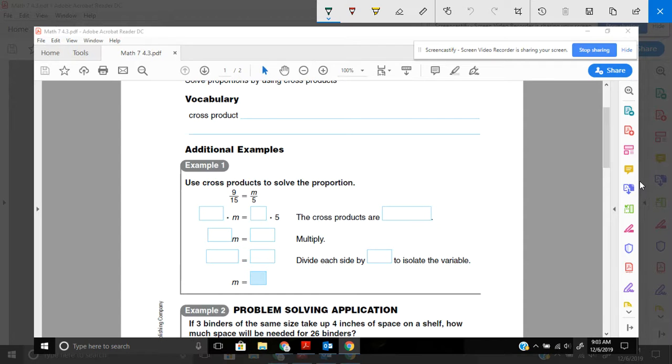So starting with the vocab, cross product is the product of the first term in one ratio and the second term in the other. That definition to me is a little bit wordy and a little bit confusing. So what I want to do is I want to show you a model of that.